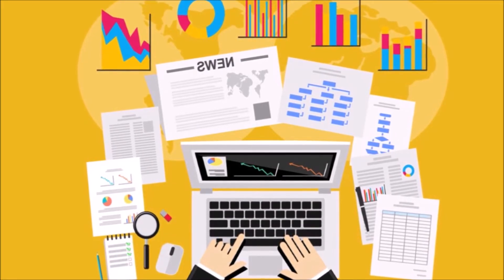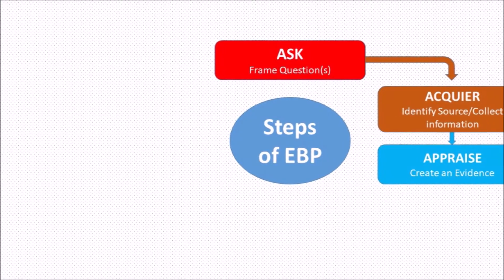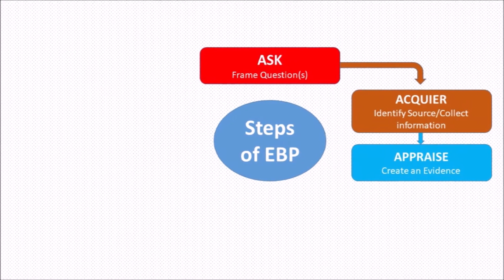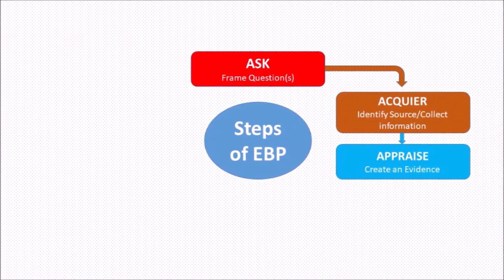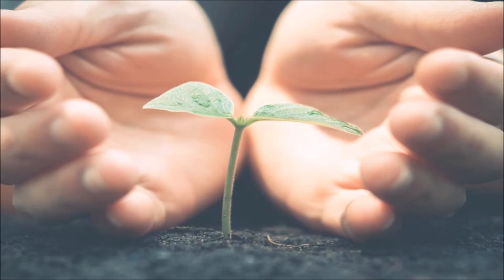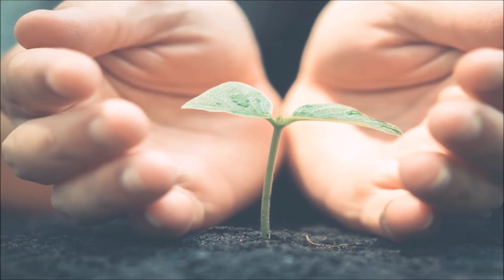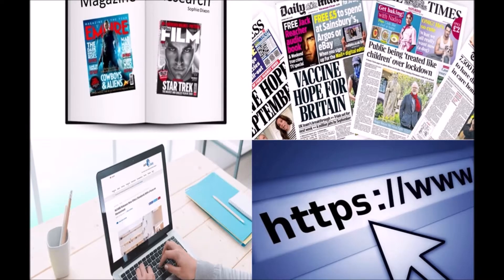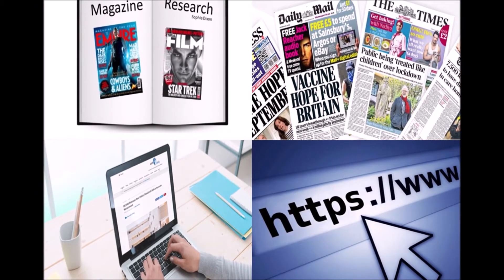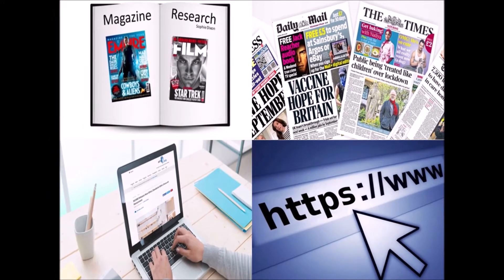After collecting the information, you go for the next step, i.e., Appraise Evidence. Once you collect the information, you need to find out the available evidence in that particular information collected in step 2. This can be done by reviewing the collected literature.